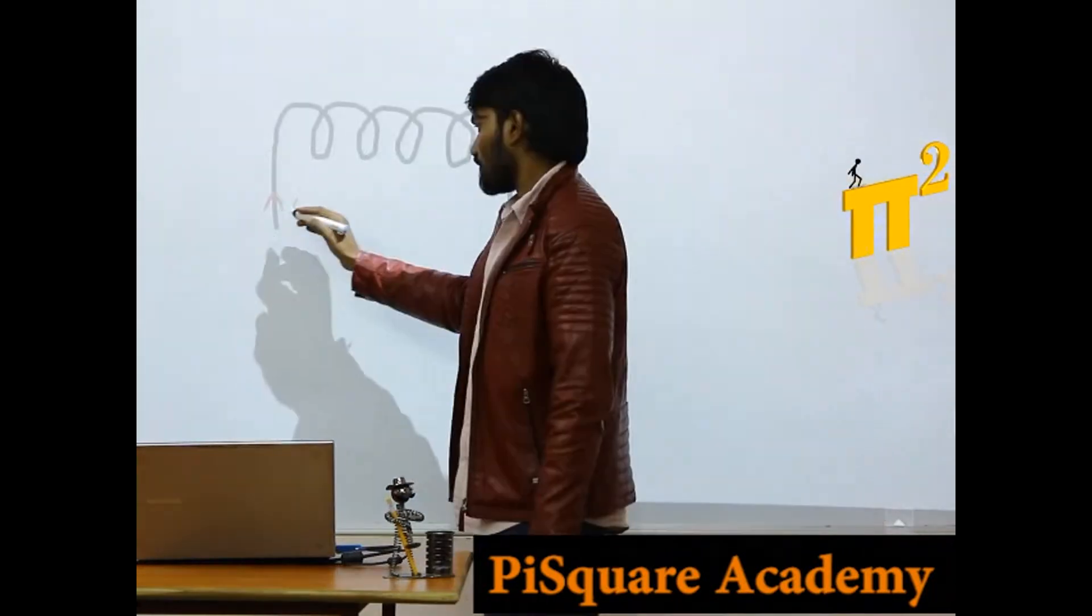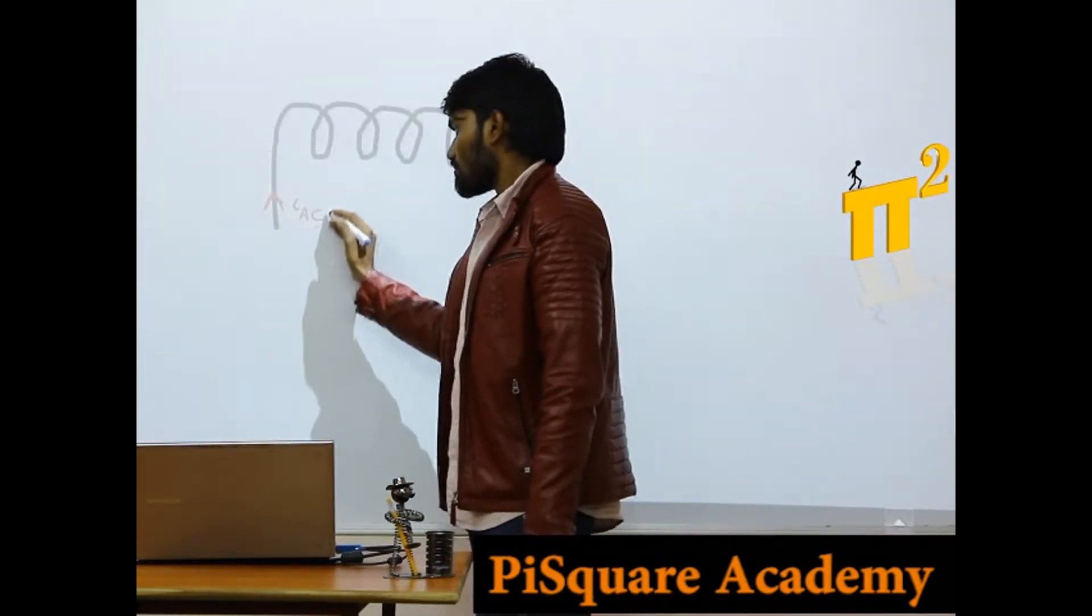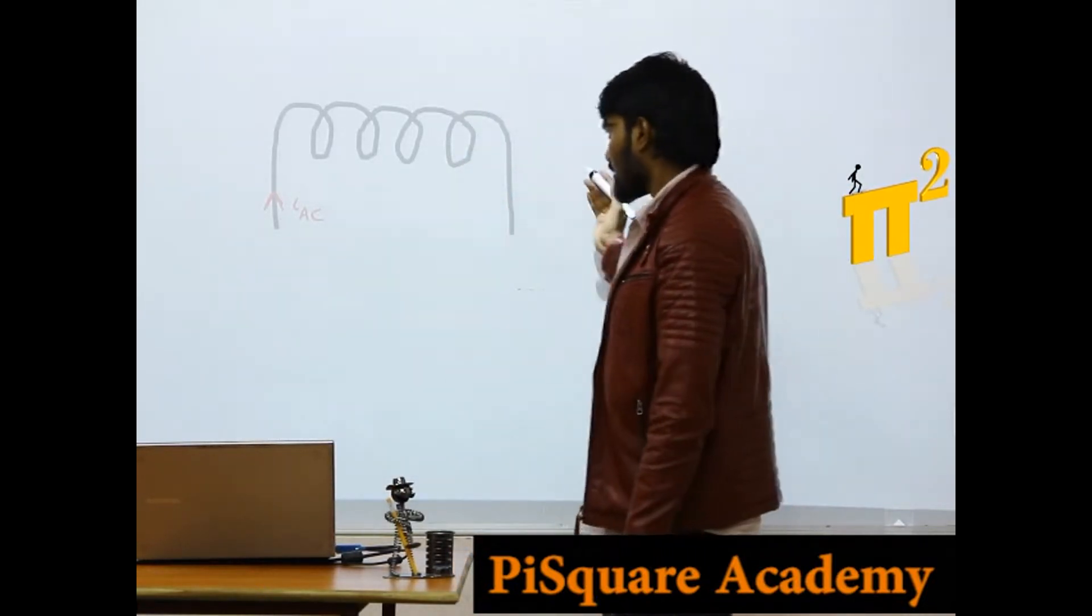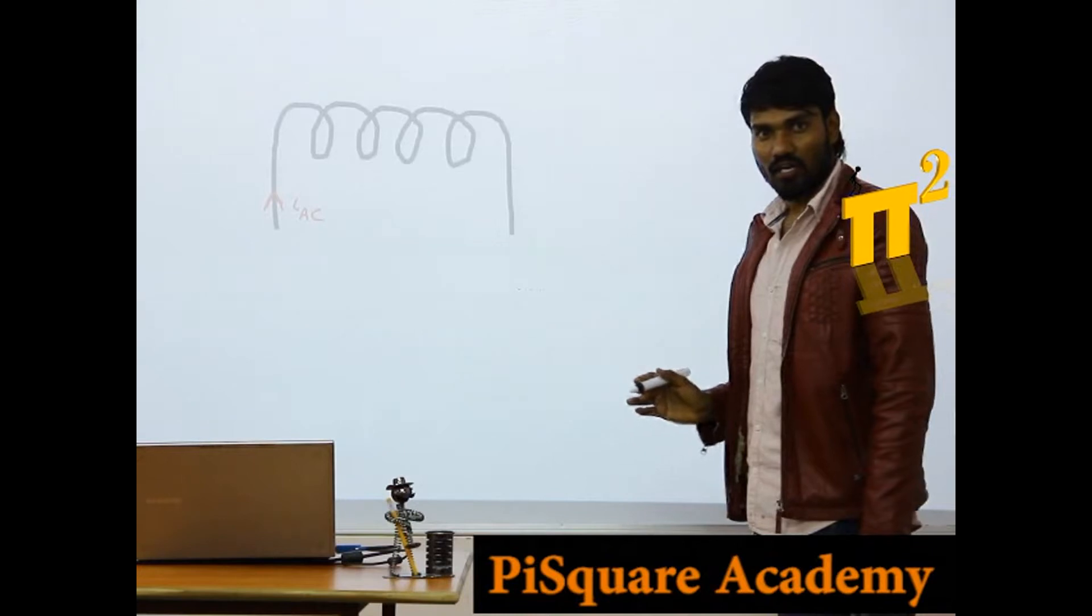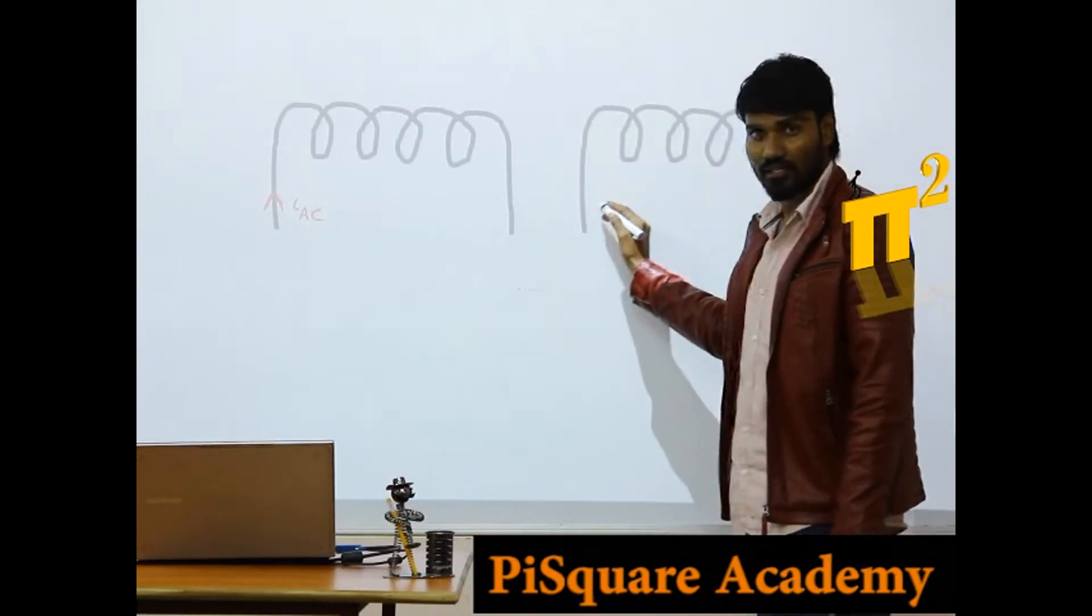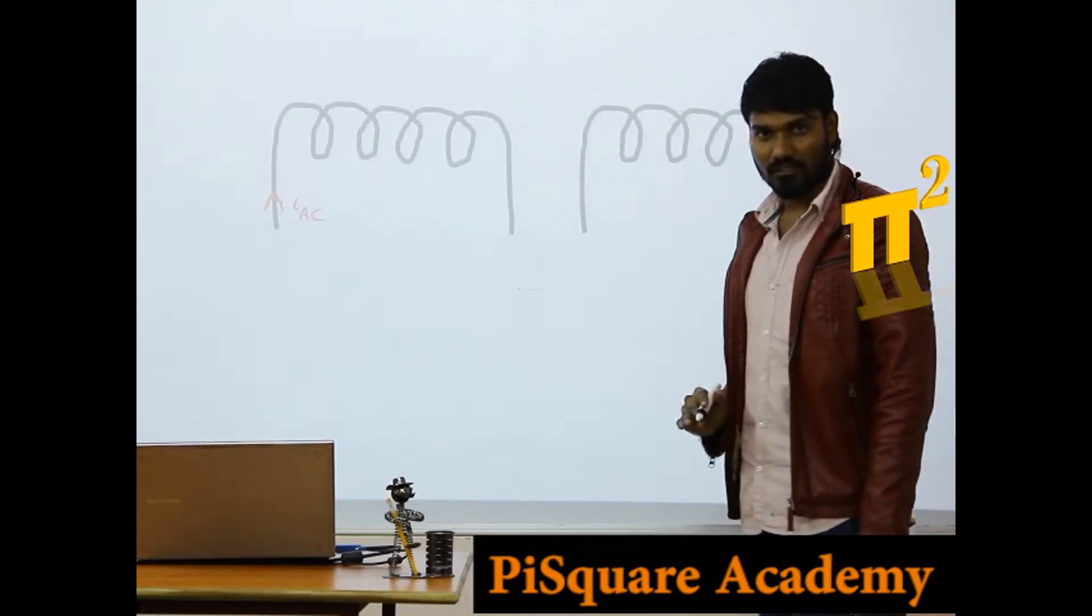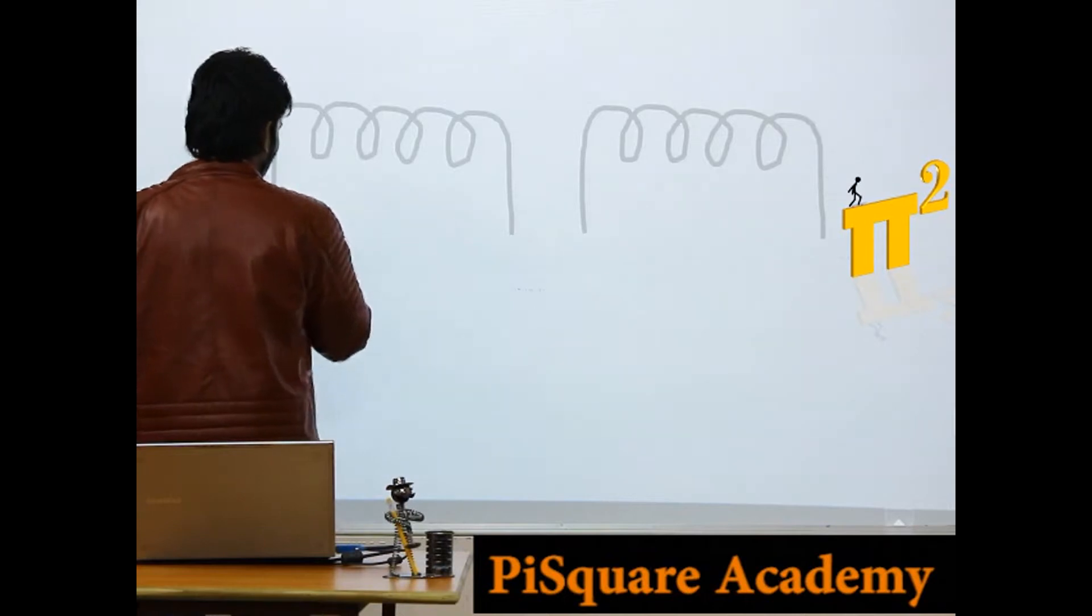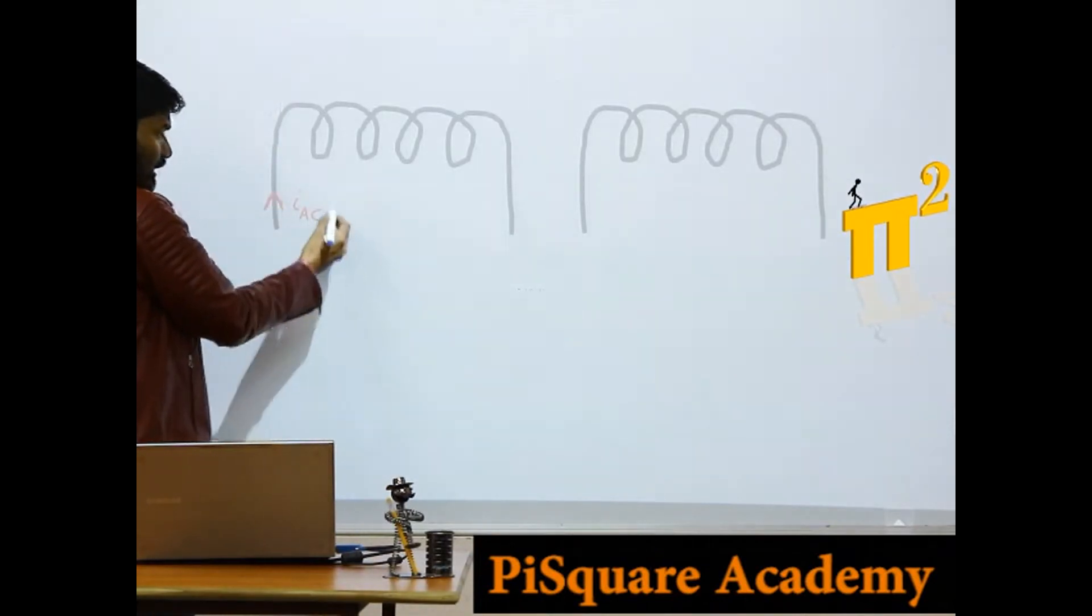We have a coil which is carrying some alternating current I AC. Now next to this I am having another coil, just another coil which is not connected to any supply, just coil is present there.